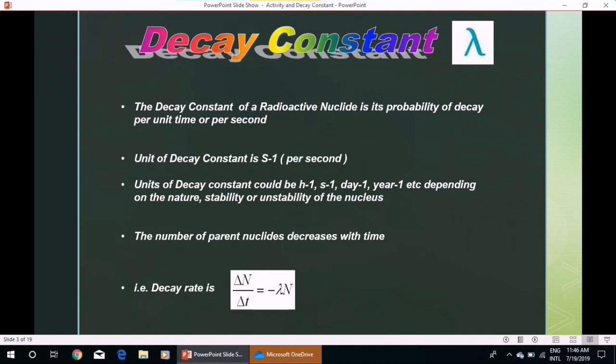The number of parent nuclides decreases with time. Therefore, decay rate is ΔN/Δt, which is equal to -λN, where λ is the decay constant.